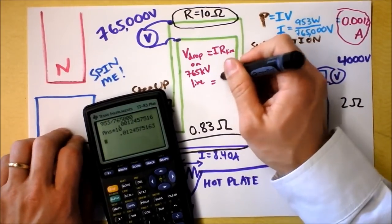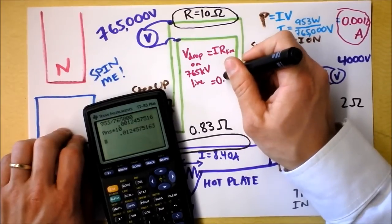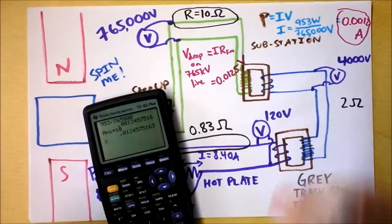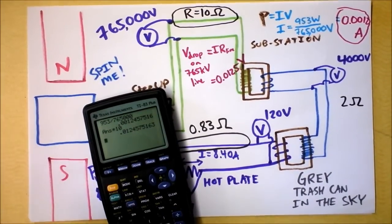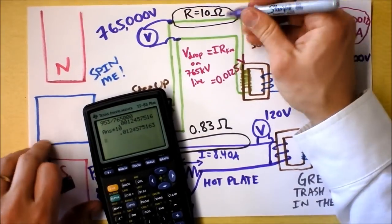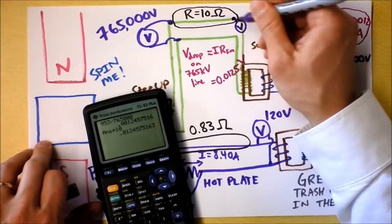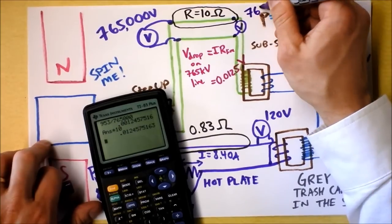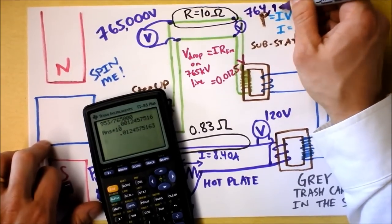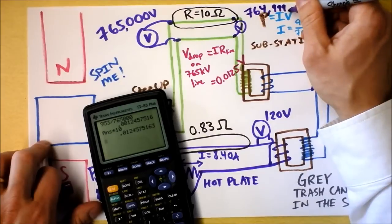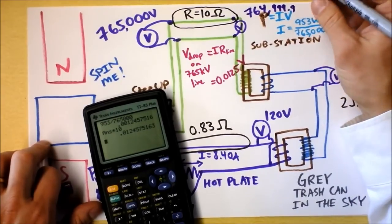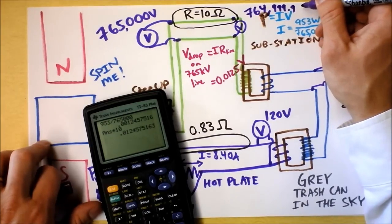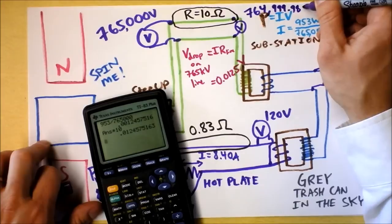The voltage drop on here is, wait for it, that voltage drop is 0.0125 volts. What that means is if I take a voltmeter on the opposite side of the line, once the drop has occurred, that voltage is going to read 764,999.988 volts.